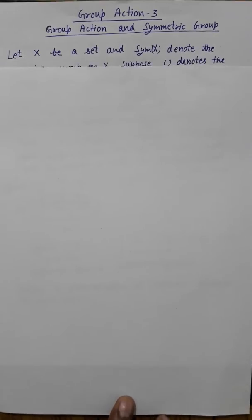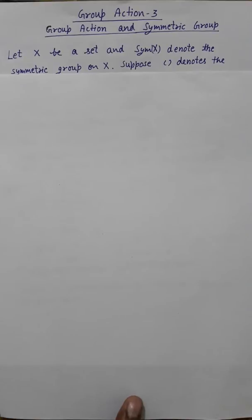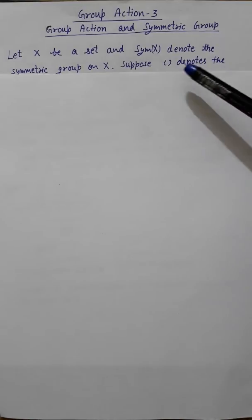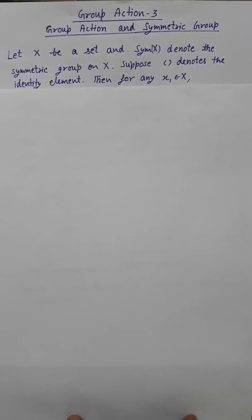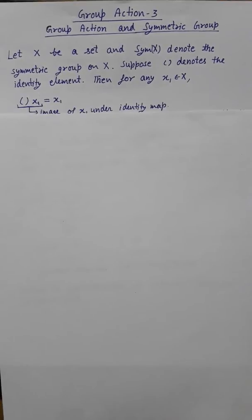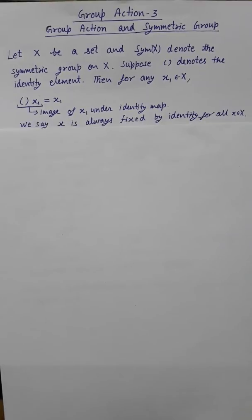Let X be a set and Sym(X) denotes the symmetric group on X. Sym(X) is the collection of all bijective maps from X to X, and this is a group with respect to composition of maps. The identity element is the identity map in Sym(X): for any x in X, operating the identity element on x gives x itself.